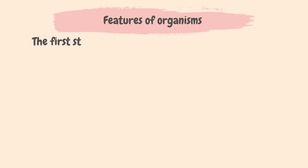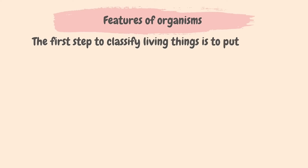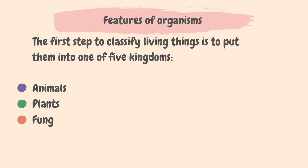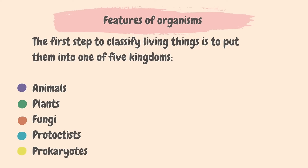The first step to classify living things is to put them into one of five kingdoms. They are animals, plants, fungi, protoctists and prokaryotes.